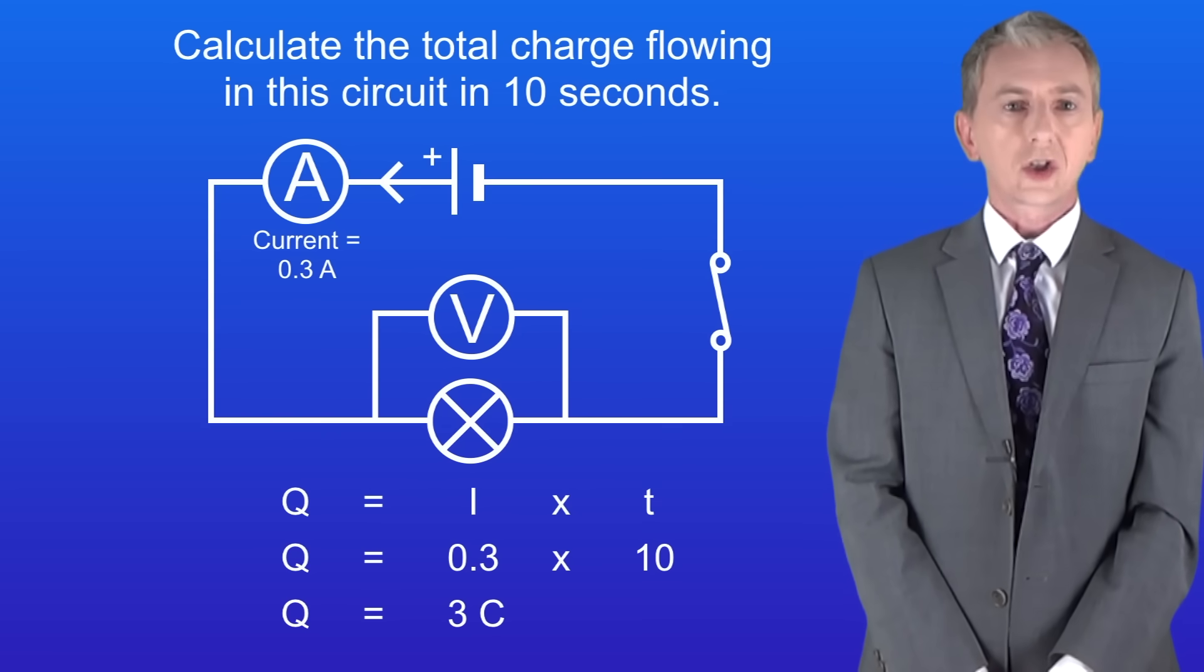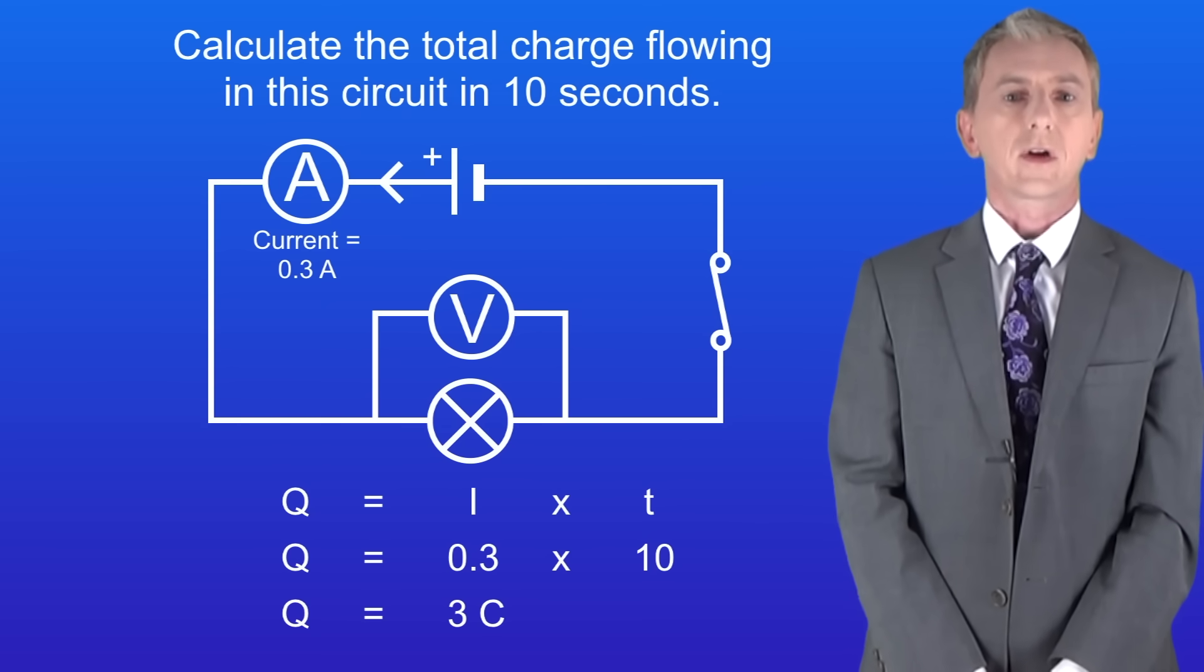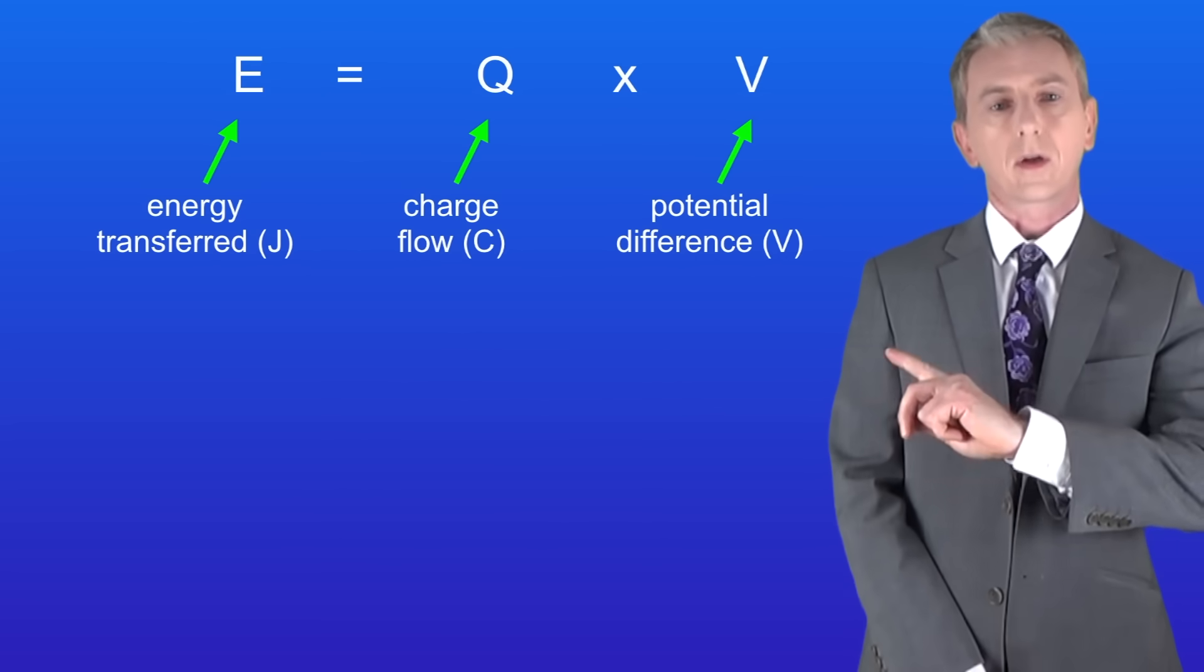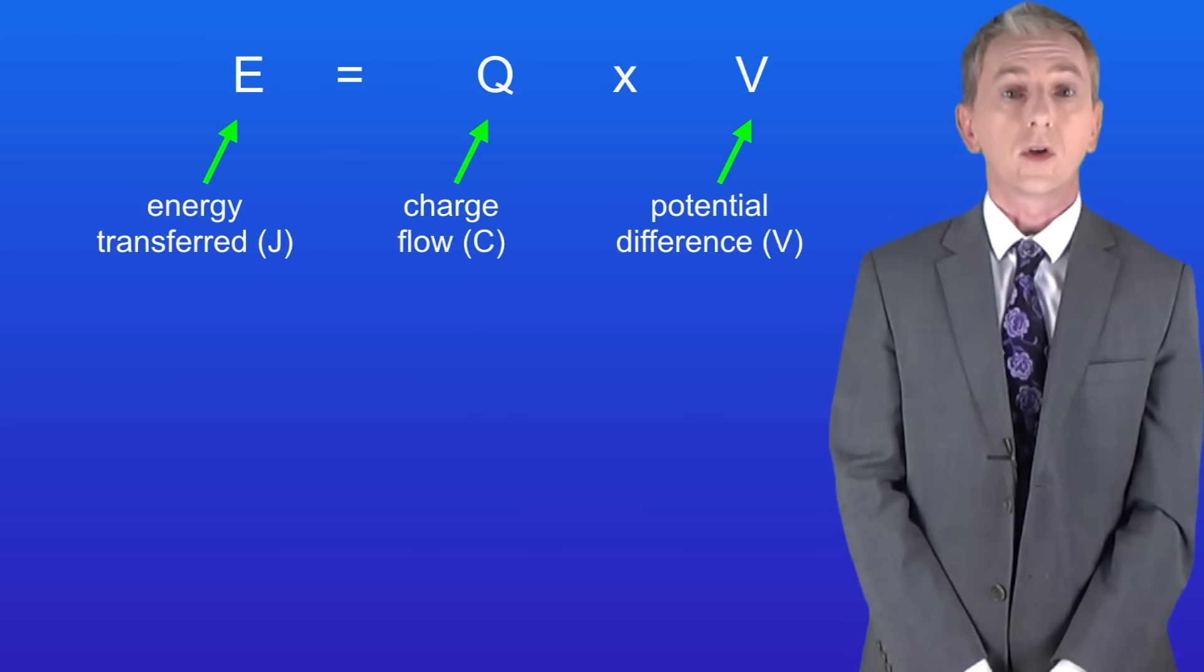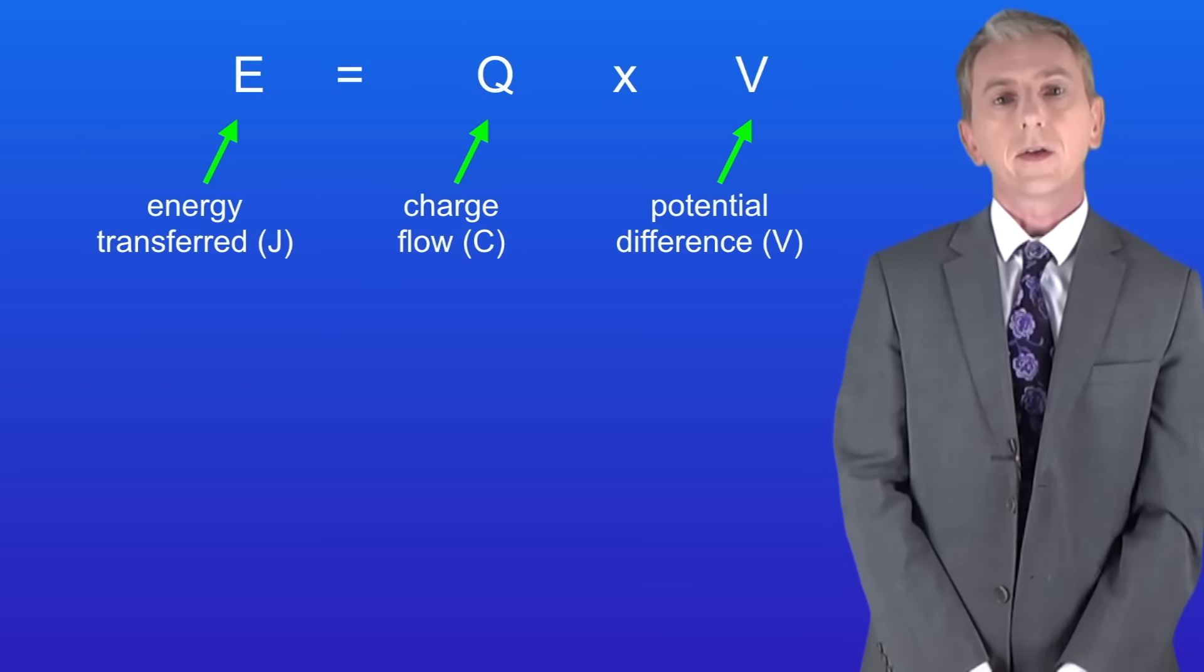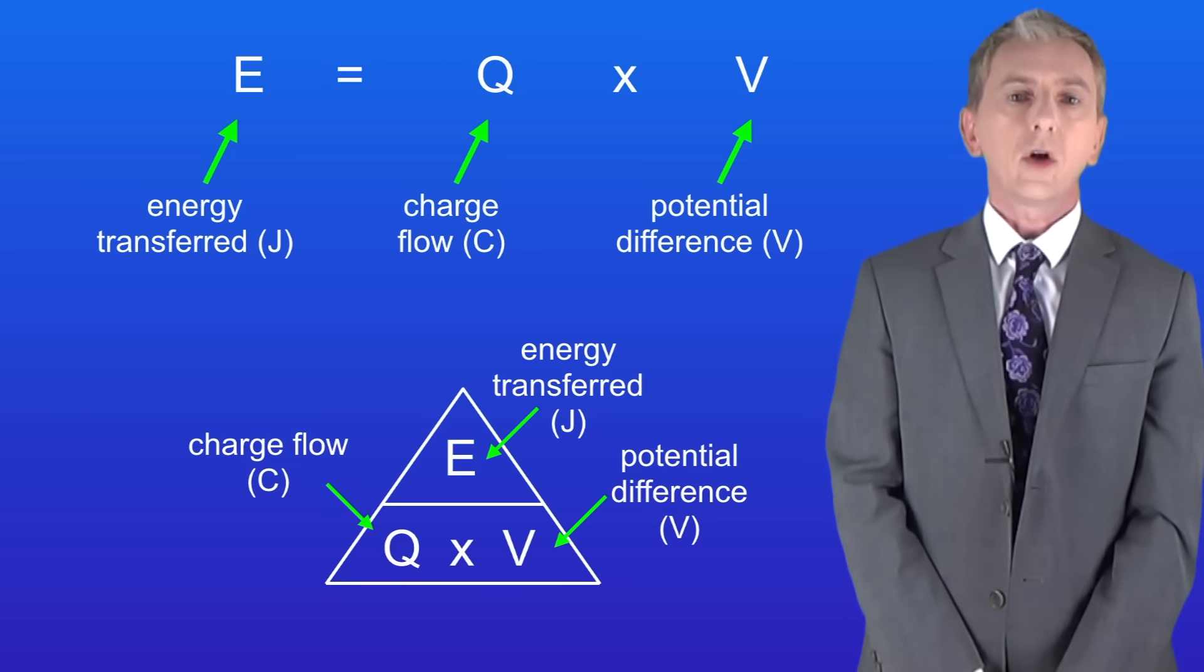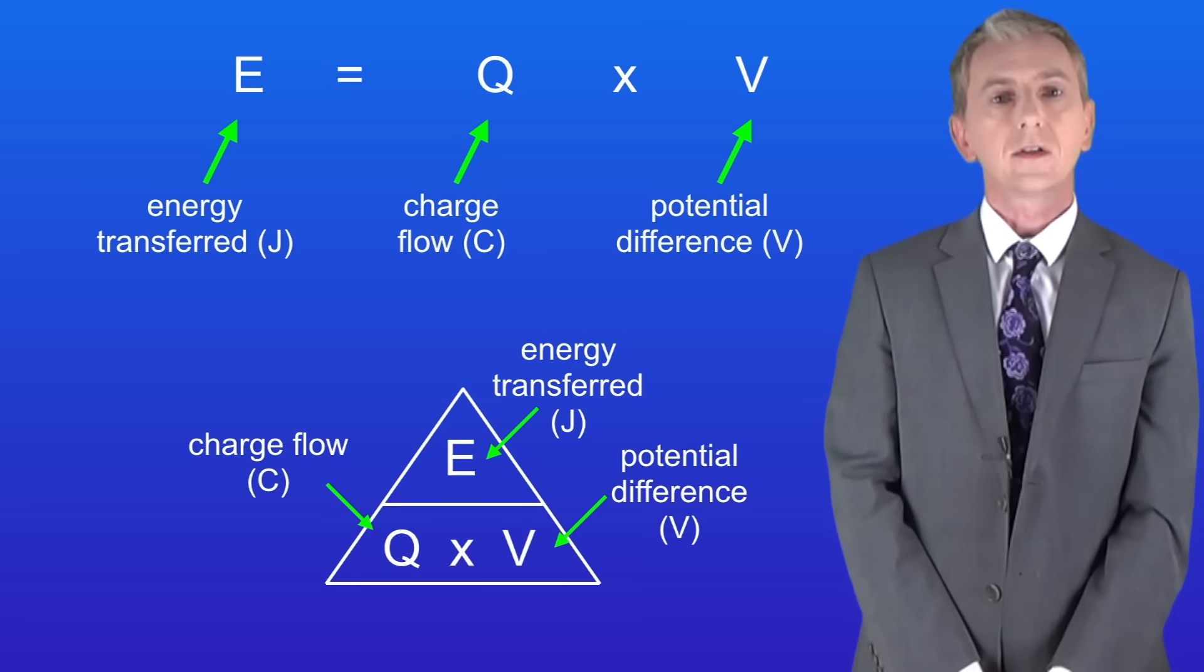Now whenever charge flows in a circuit work is done. In other words energy is transferred. We can calculate the energy transferred using this equation. The energy transferred in joules equals the charge flow in coulombs multiplied by the potential difference in volts. And here's a triangle if you prefer to use this. Now you're not given this equation in the exam so you do need to learn it.